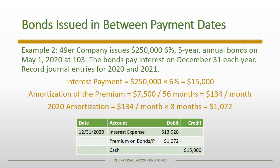The journal entry shows the cash payment, the amortization of the premium, and the interest expense is derived from those two amounts. In 2021 there's a full 12 months of amortization, so the premium amortization would be $1,608. With the same cash payment, the interest expense would be a little bit less because we have more amortization of the premium.